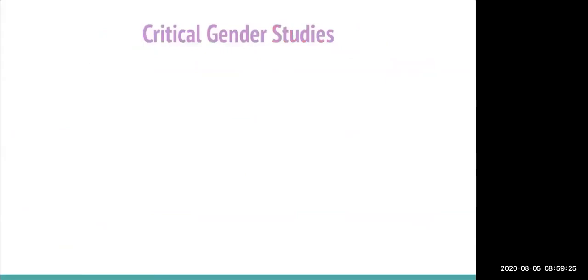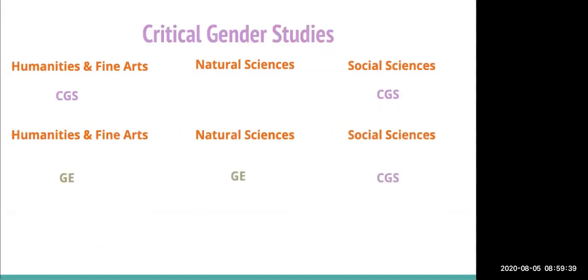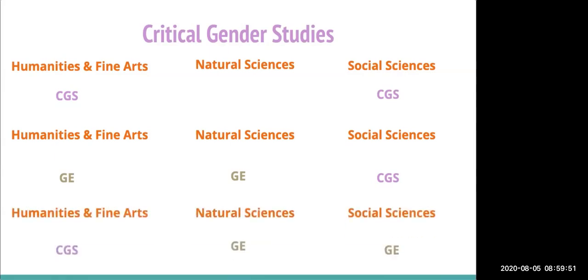Critical gender studies is automatically categorized under social science, but you can request to categorize it under humanities and fine arts. If kept under social science, you'll need GEs in humanities and fine arts as well as natural sciences, math, and engineering. Importantly, categorizing your major differently does not change your major requirements — it only determines which disciplines your GEs will be in.